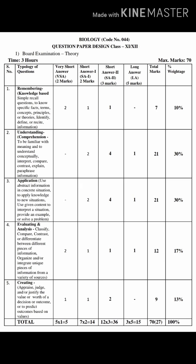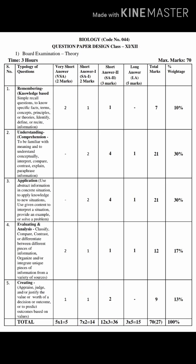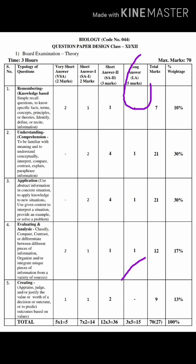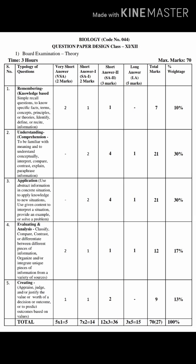The very short answer type will be five questions of one mark each with one word answers. Next will be short answer type one — seven questions of two marks each. Short answer type two will be 12 questions of three marks each. Long answer type questions will be three questions of five marks each.